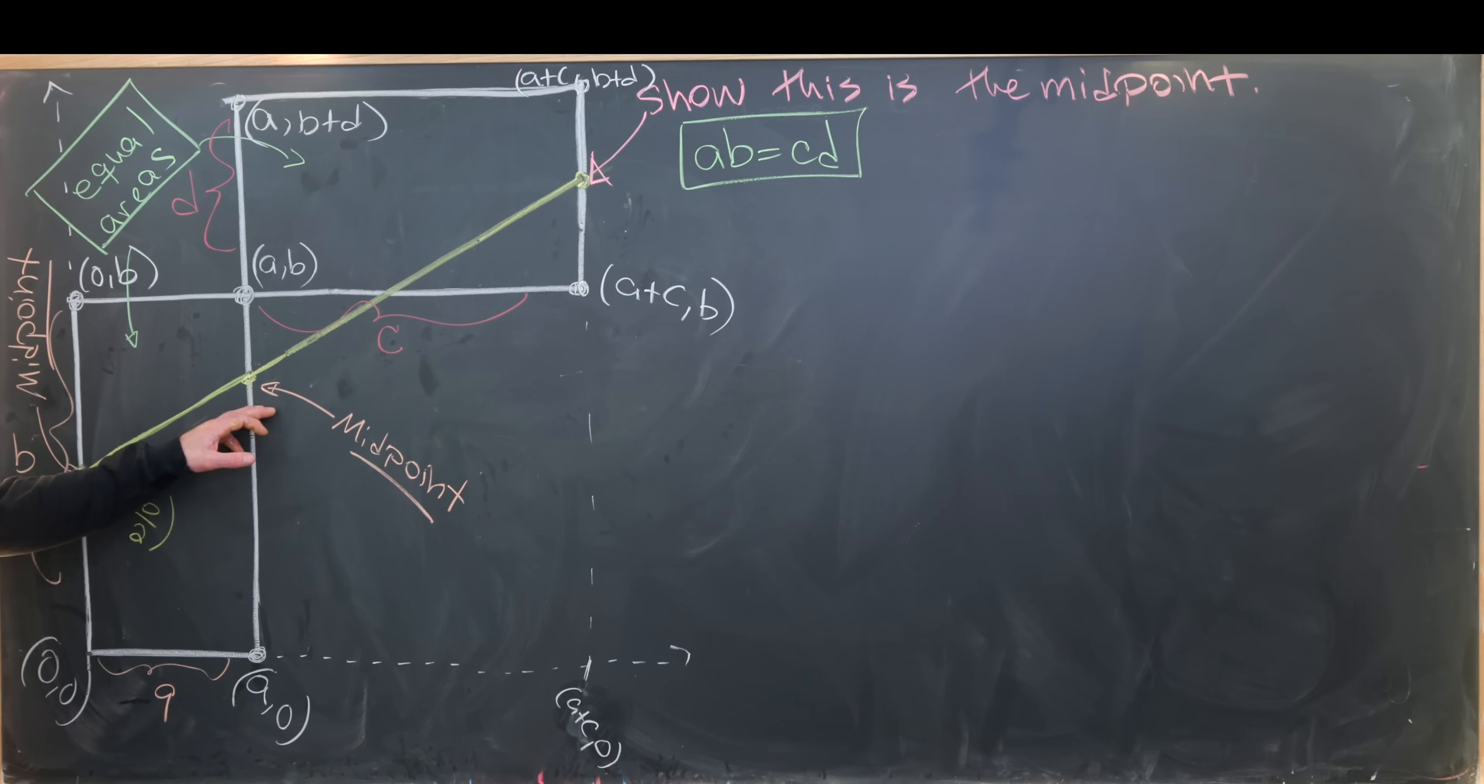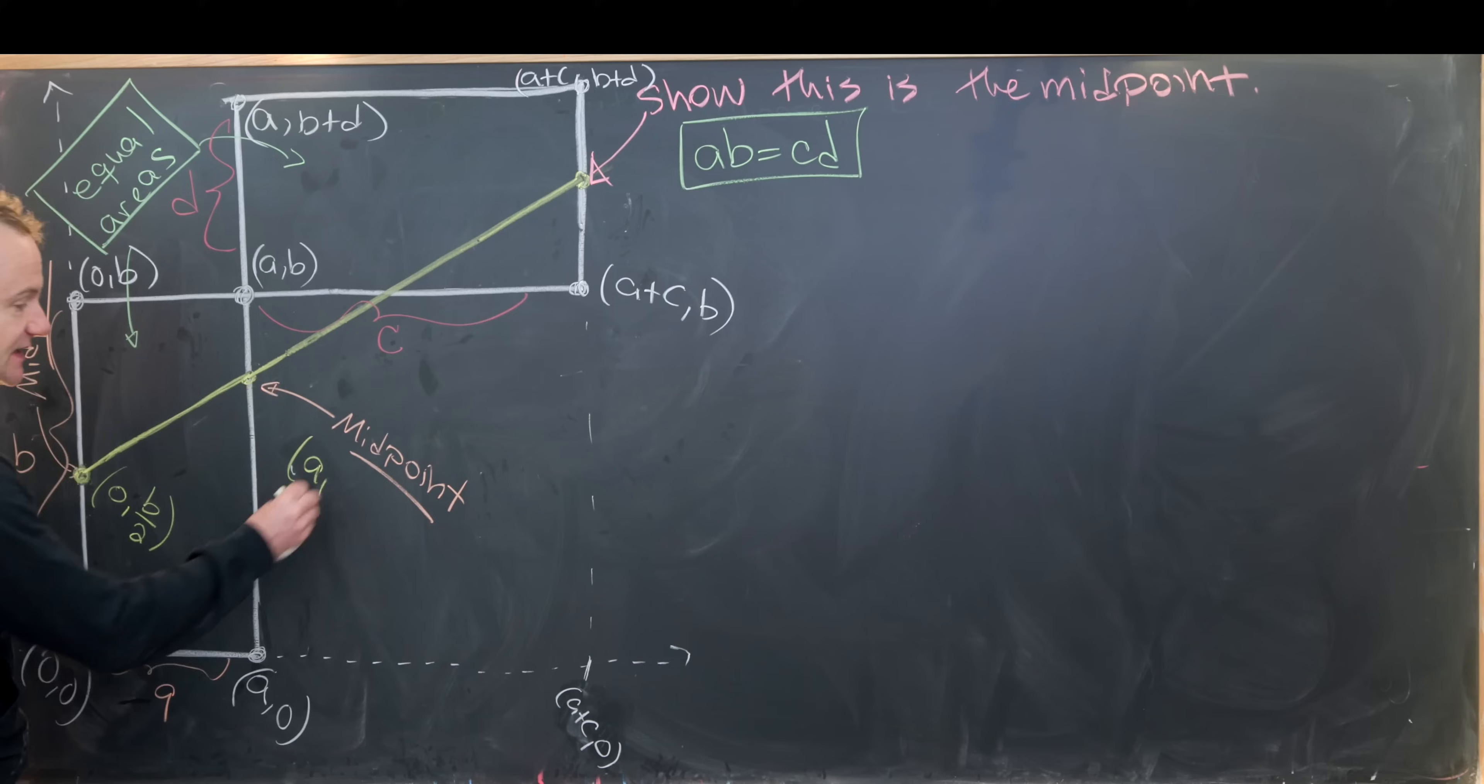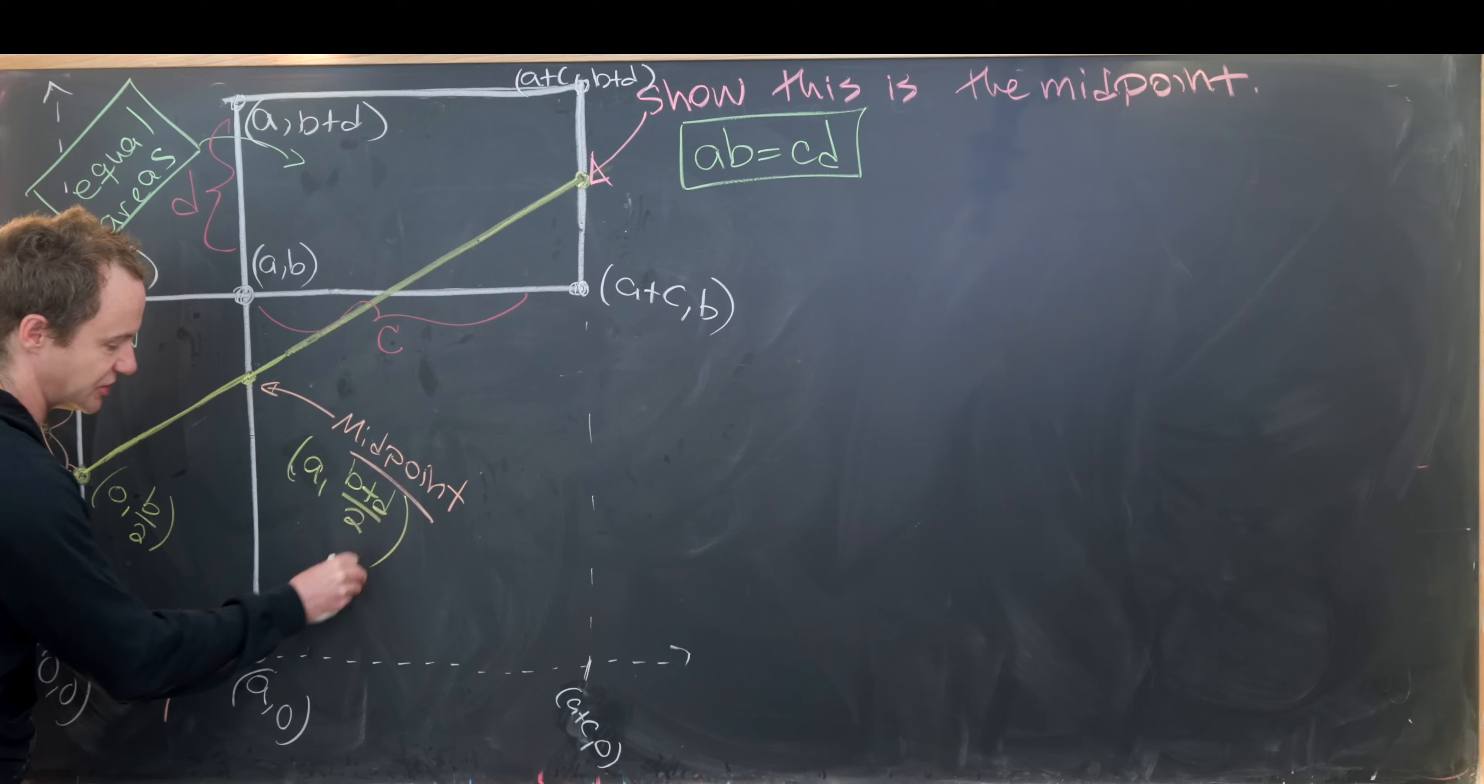Now let's calculate this midpoint. Notice it has x-coordinate a, so I've got a. And then the y-coordinate will be half of b+d, so that's (b+d)/2.